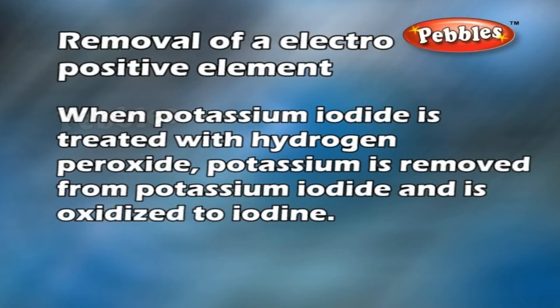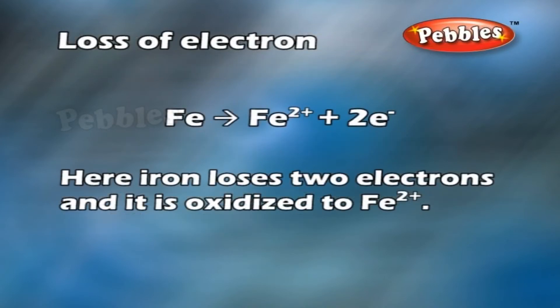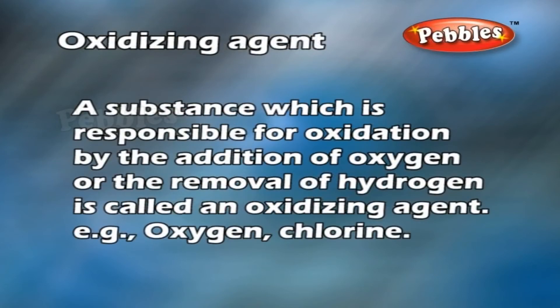Removal of an electropositive element: when potassium iodide is treated with hydrogen peroxide, potassium is removed from potassium iodide and is oxidized to iodine — here potassium is an electropositive element. Loss of electron: iron loses two electrons and it is oxidized to Fe²⁺.